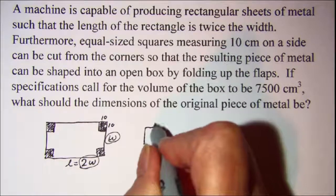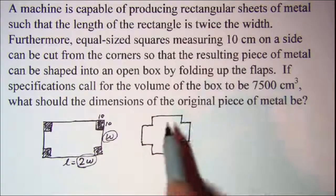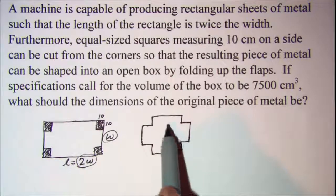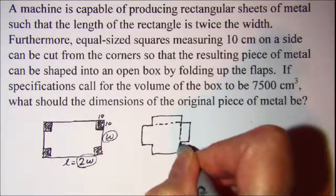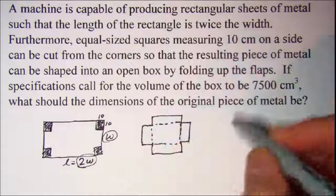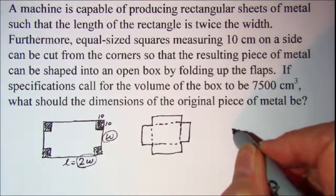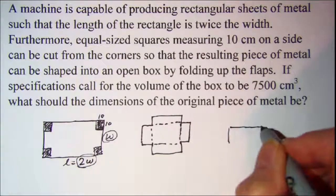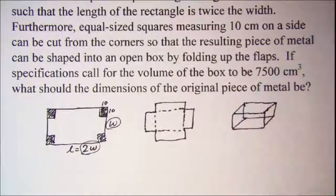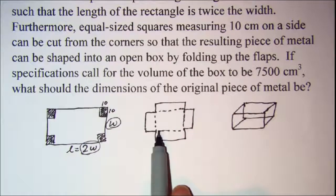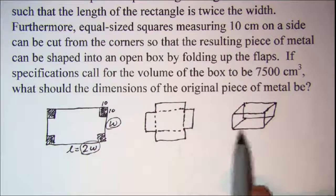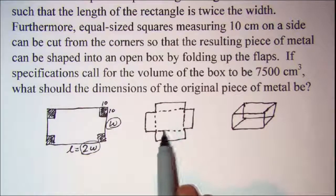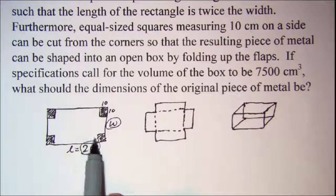Let me redraw that — these are my flaps — so I'm going to fold up along these dotted lines and end up with a box. Let me draw my box here. This dimension on the box is going to be my original length of 2W.